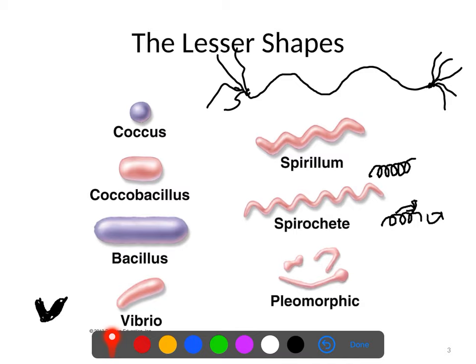Last, we have pleomorphic bacteria — this is kind of a catch-all category. 'Pleo' means many, 'morphic' means shape. These can be bacteria that have irregular or non-standard weird shapes, or bacteria that can change their shape over the course of their life. Either of those would be considered pleomorphic.